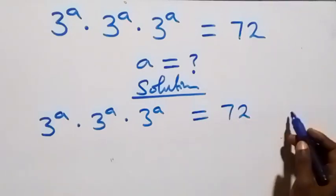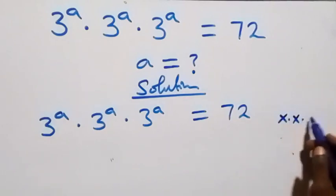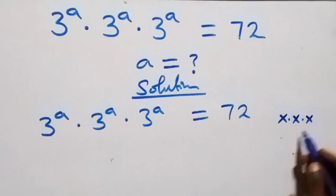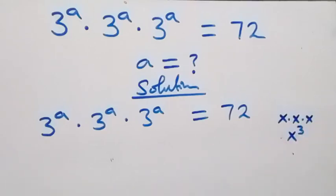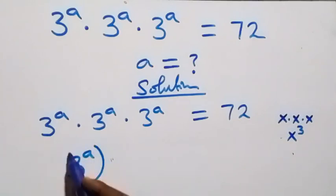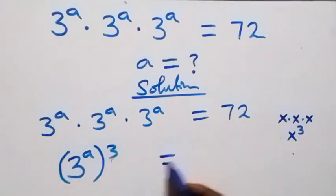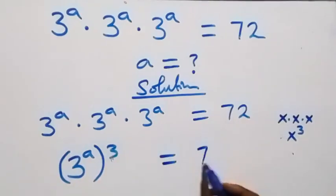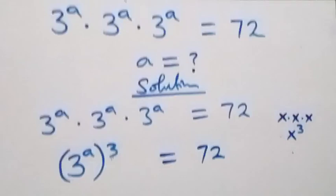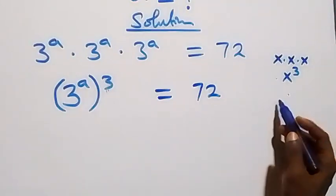From what we have, this follows: when we have x times x times x, which you can write as x raised to power three. So here you can write this as three raised to power a, then raised to power three, equals 72 on this side.